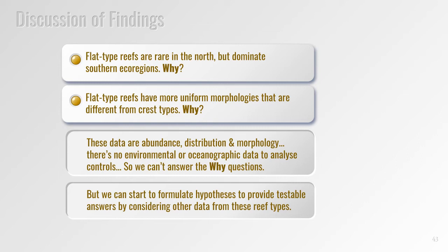Bringing these results together: the distribution of reef types shows flat type reefs are abundant in southern ecoregions but rare in the north, and the morphological data shows flat type reefs have a more uniform morphology that is different from crest type reefs. These findings imply that flat and crest type reefs may be two different reef types rather than Darwin's single type with different stages. However, our data relate only to abundance, distribution, and morphology — there's no environmental data such as wave energy or hurricanes that can help explain these differences. But we can consider other types of data from these reefs, specifically reconstructions of the internal structure of reefs documented by drilling studies, to help formulate a hypothesis.